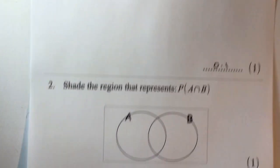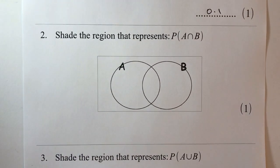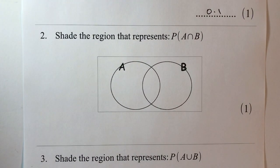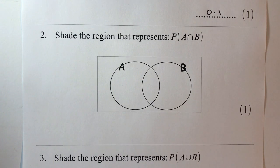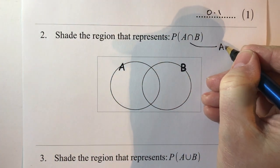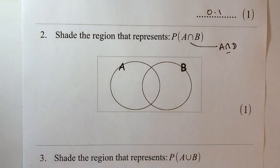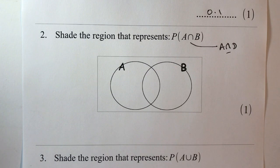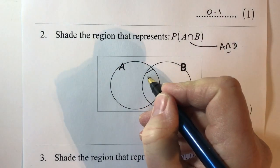Let's have a look at question number two and it says shade the region that represents probability of A and that little symbol there means and B. Now sometimes you might hear it as intersection. I happen to remember it as and because in my mind that looks like A N D. Well the reason that represents the probability of A and B is going to be this central region here.